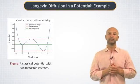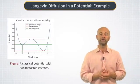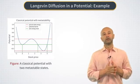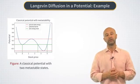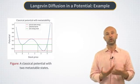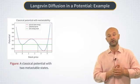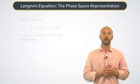On this graph, you can see an example of a potential Ux that can arise in the Langevin equation. This potential has two metastable states, and we will talk quite a bit about such potential in this lecture and the next one.